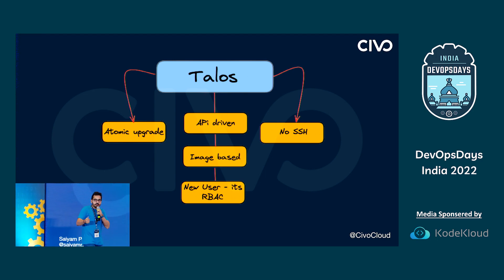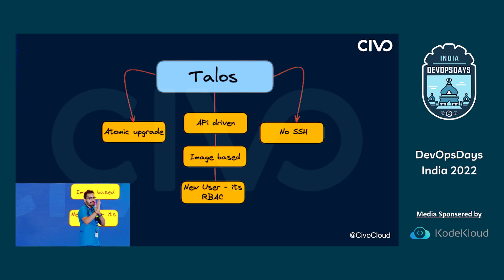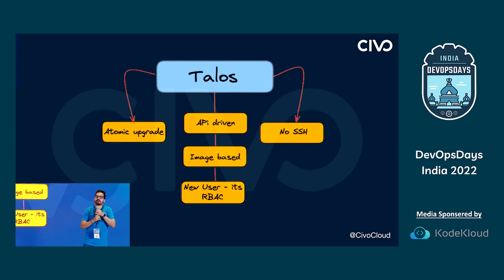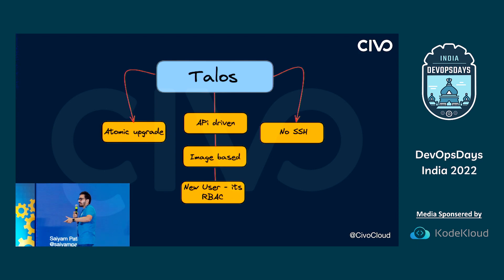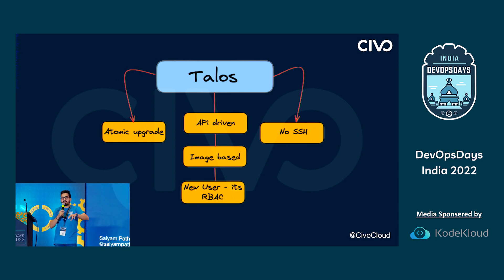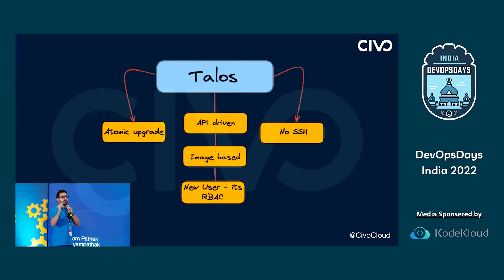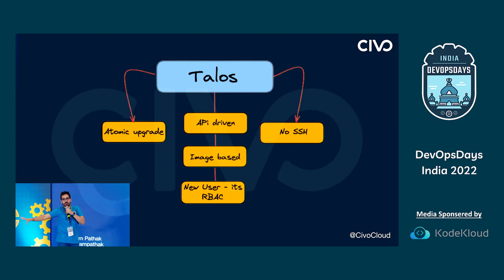Everything is API driven. It's a YAML file, and you interact with the Talos cluster using that API. For example, if you need to configure another network, configure kubelet parameters, or upgrade — there's a command for that. If you need to do it manually, you can configure the file, apply it, and get the Talos cluster updated.